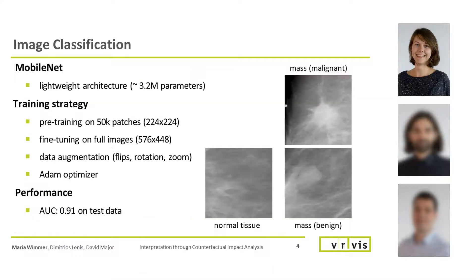We first pre-train a MobileNet classifier to distinguish normal breast tissue from masses on patch level. We then fine-tune this model on image level for the same task. To increase performance, we additionally augment patches and images and apply different learning rate strategies during training. Our final image model achieves an AUC score of 0.91 on test data.